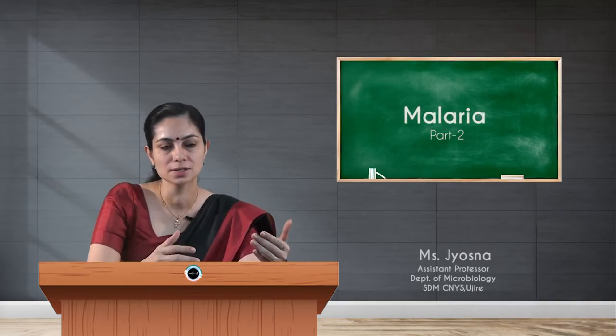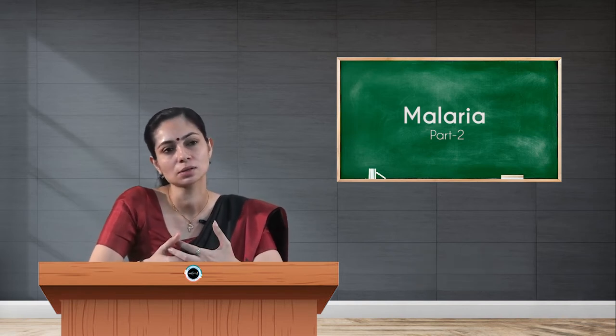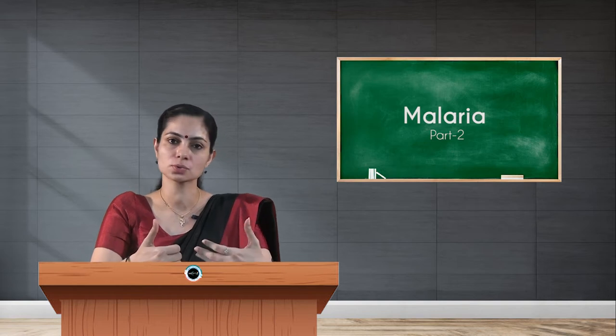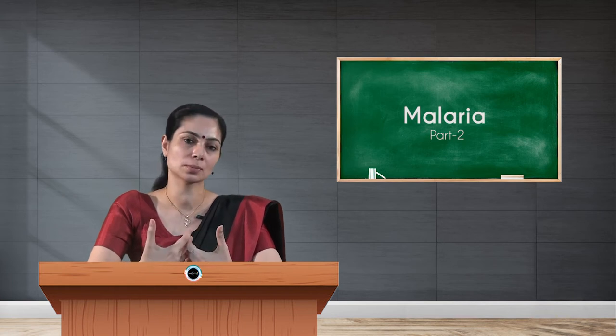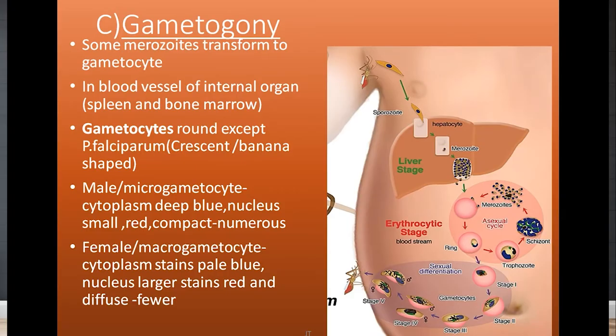Let us continue with the malaria topic. We have completed the first two stages of the malarial parasite lifecycle which happen in the human body. The third stage is gametogany. We already discussed pre-erythrocytic schizogony and erythrocytic schizogony. Now in gametogany, some of the merozoites which are already released will not attack new RBCs but will transform into gametocytes.